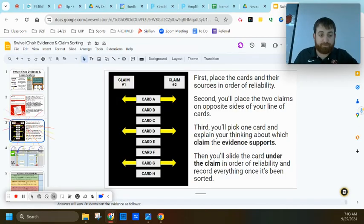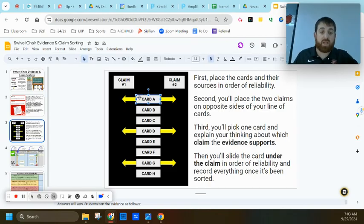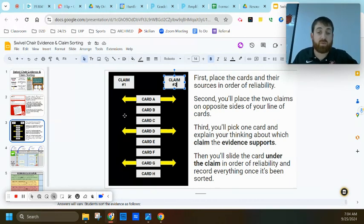To do that, you're first going to place the cards in order of their sources and their reliability. For example, I have card A through H here, and let's pretend you put these in order of reliability. A would be the most reliable, H would be the least reliable. Second, you're going to place the two claims on opposite sides of your line of reliable and unreliable cards and sources, so that you can begin deciding which one they fall under in terms of supporting which of those claims. Remember, claim one was yes, we should buy because it charges all the devices, and claim two is it does not.